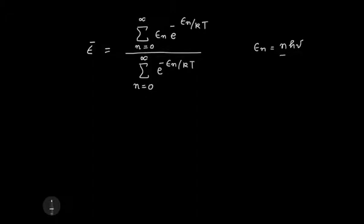See, if you calculate this, what you get is epsilon bar equals h nu by e to the h nu by kT minus one. Let me write here the value of epsilon bar again, and I divide by kT here, which gives me a kT on the outside here.